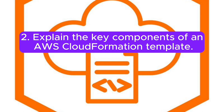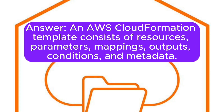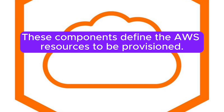Question 2: Explain the key components of an AWS CloudFormation template. Answer: An AWS CloudFormation template consists of resources, parameters, mappings, outputs, conditions, and metadata. These components define the AWS resources to be provisioned.